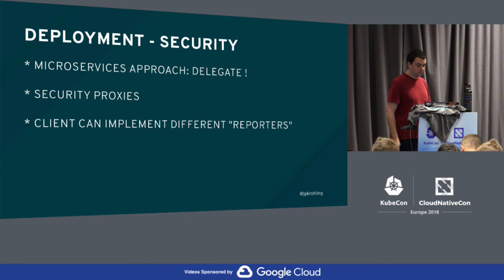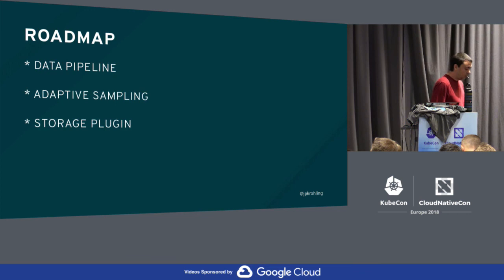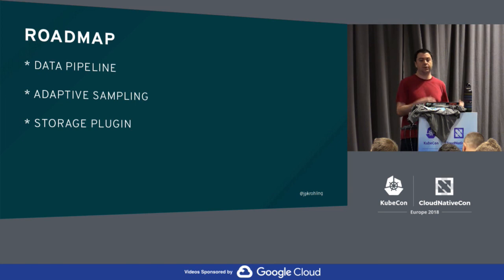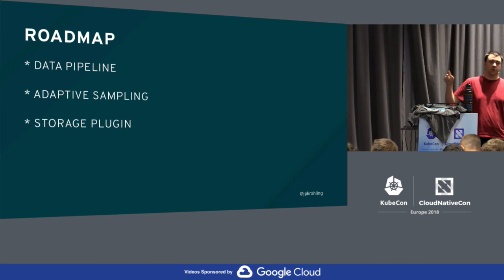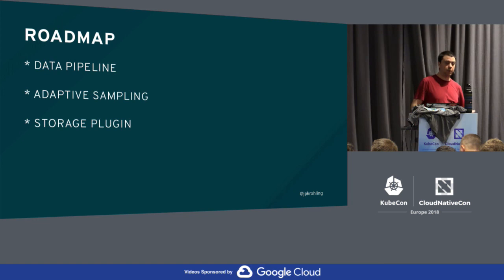The roadmap for Jaeger has three features. The first is a data pipeline — instead of just letting data flow to Cassandra or Elasticsearch, we also want to have this data on Spark and extract insights from it. For example, understanding the service path for a given request pattern, so that when you're doing an upgrade you can see the critical paths in your application and know what to take care of beforehand.